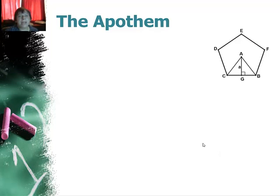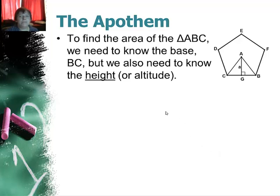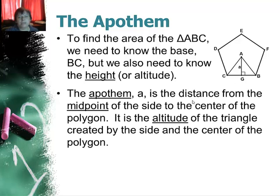Alright now the apothem. To find the area of the triangle let's say I just wanted to find this area right here. Well I need to know the height. And that height is the distance from the center to the midpoint of the edge. Now remember we called that the apothem. So it is the altitude of the triangle.